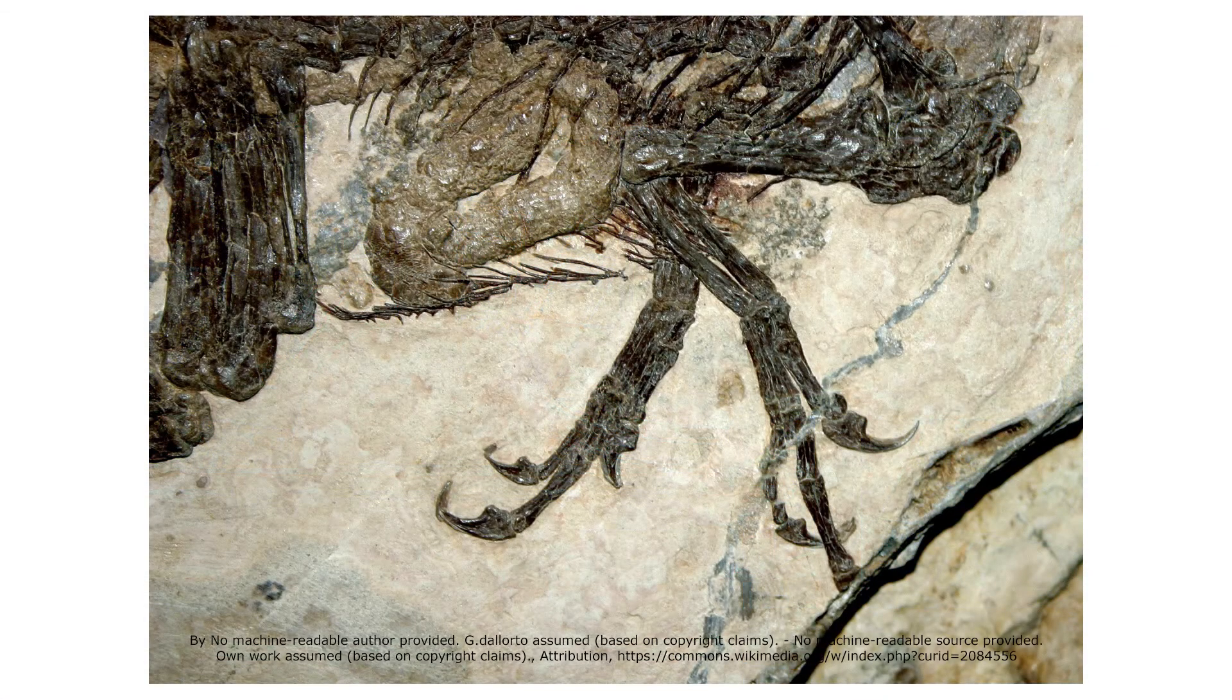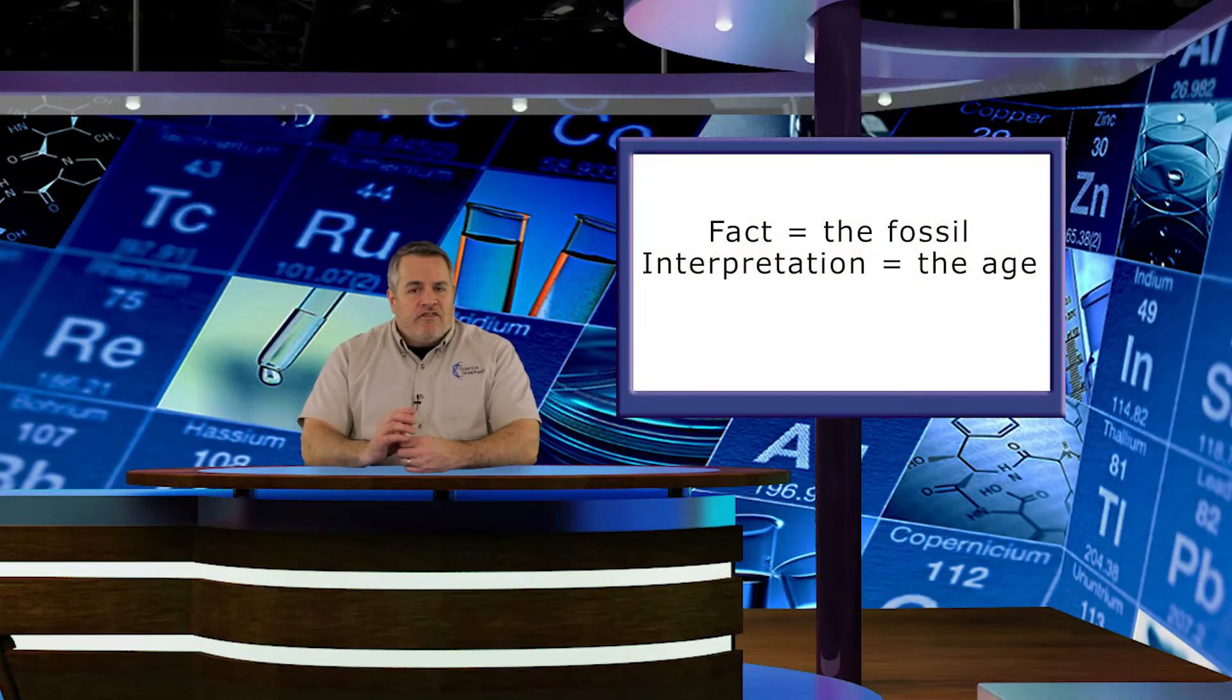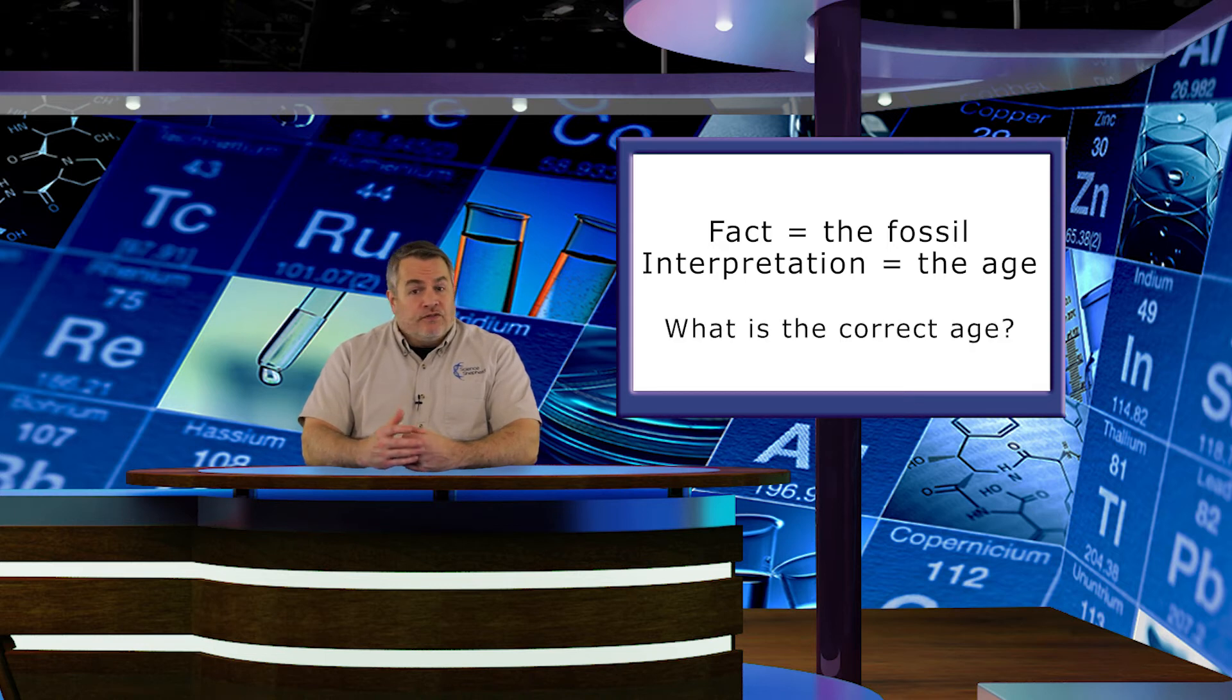As an example, this is a fossil of a dinosaur, which the creation model interprets as being about 4,000 years old, since the majority of fossils in the creation model were created in Noah's Flood. The naturalism model interprets this fossil as being 65 million years old. The fossil is the fact, and the age is the interpretation. How to decide which is correct? Is the fossil 4,000 years old or 65 million years old? Well, we can make ourselves a little bit smarter so that we can make a better determination of which age is correct by looking at other facts about the fossil to see if they support one interpretation or the other.